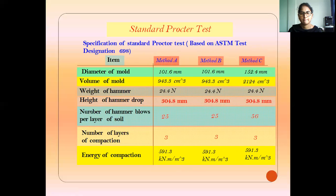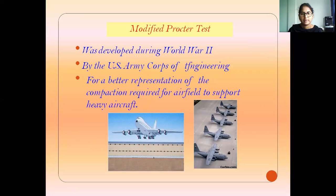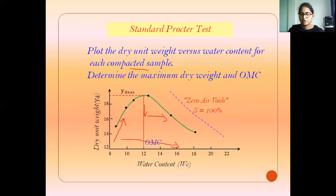The key parameters to note in the compaction test are: diameter and volume of the mold (1000 cm³), weight of hammer (2.5 kg), height of drop (300 mm), number of blows (25), number of layers (3), and the sieve size used (4.75 mm). The modified compaction test will be discussed in the next class. This concludes the standard Proctor compaction test. Thank you.